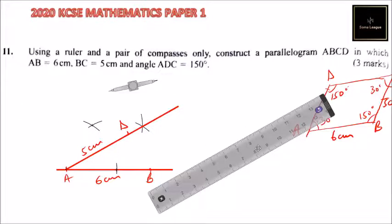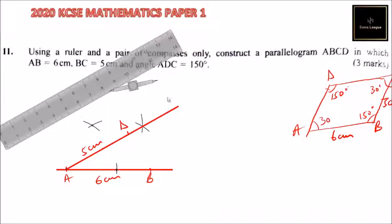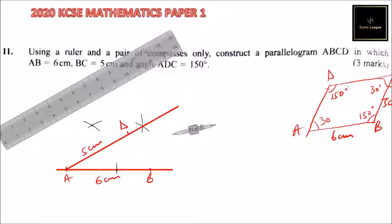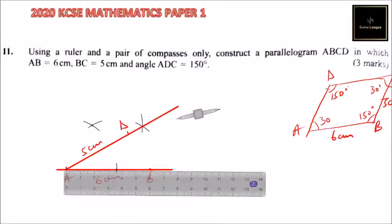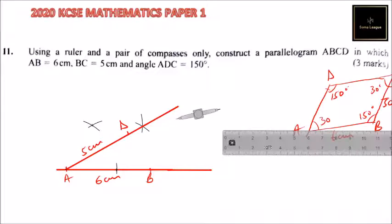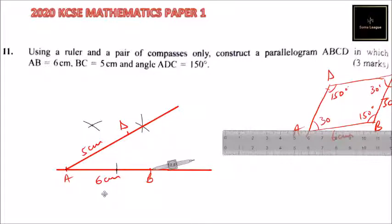So we can construct another angle at B — we can construct an angle of 30 degrees. Let me first extend my line so that you have enough space. Once you do that, you can extend your line like that. Now that is going to help us construct an angle of 30 degrees using the same method. So we use point B, construct an angle of 60 degrees, and then bisect it.